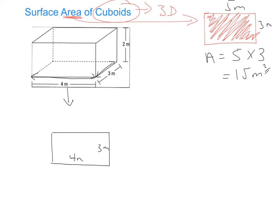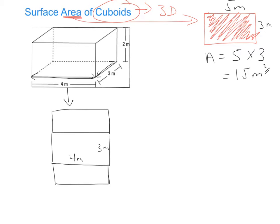Let's then look at the rectangle at the front of the shape and the rectangle at the very back — they're actually the same, so let's draw those in. This rectangle is still the same length as the bottom one, so that's still 4 metres. But this time we're looking at the height, which is 2 metres. So that's 4 metres by 2 metres, and the same for the back one.